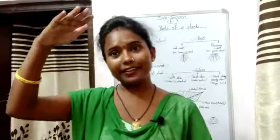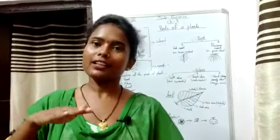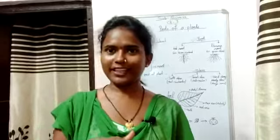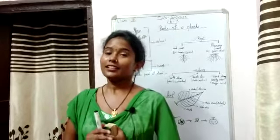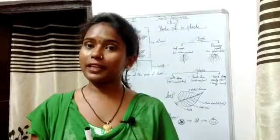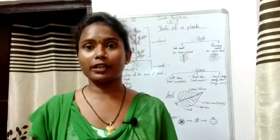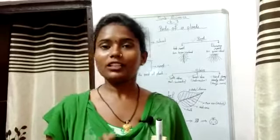Some are big trees, some are small plants, and some are very short plants. Just as our body is made of different parts, plants also have different parts that come together to form their body structure.